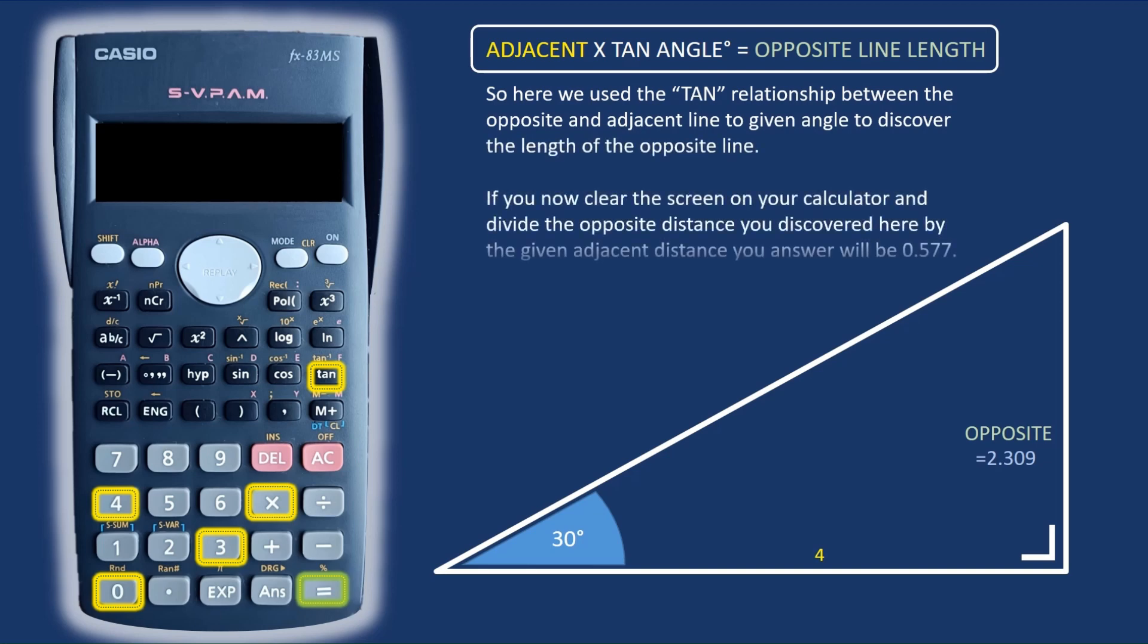So that's the TAN relationship between the opposite and adjacent line to give an angle to discover the length of the opposite line.